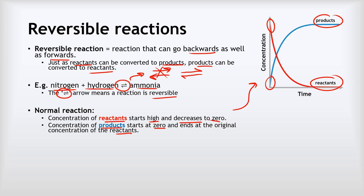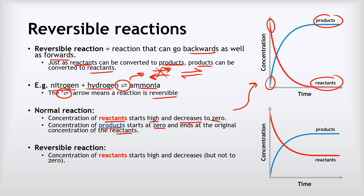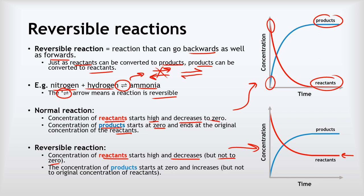If we compare that to a reversible reaction, we get quite a different graph. The concentration of reactants does start out high and decrease, but it doesn't decrease all the way to zero — it stays at some value significantly above zero. Equally, the concentration of products starts at zero and increases, but doesn't reach the original concentration of the reactants. It finishes at some value significantly below where the reactants started. That's a sign that a reaction is reversible because when it's finished, we've got significant amounts of both reactants and products.